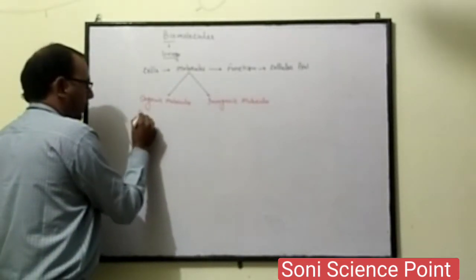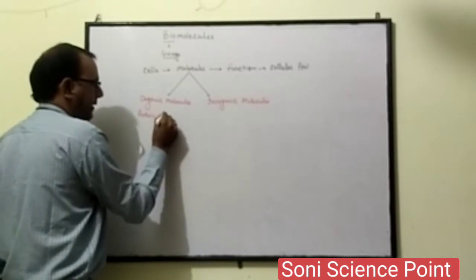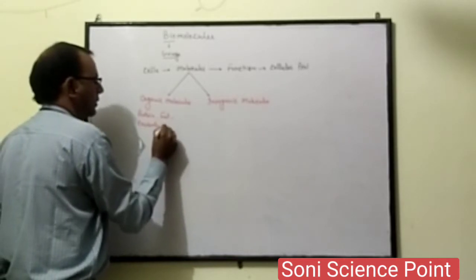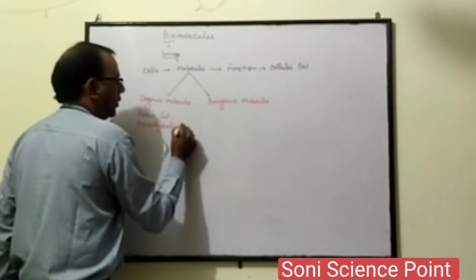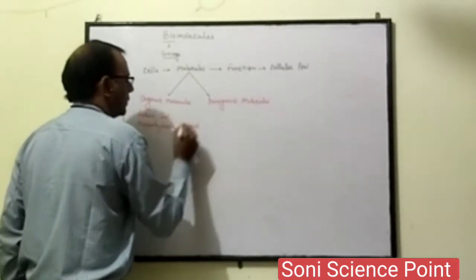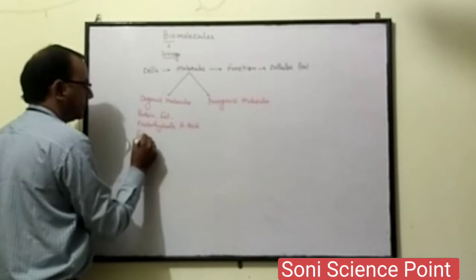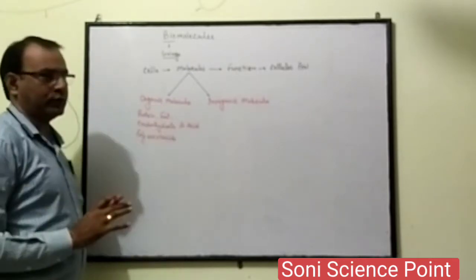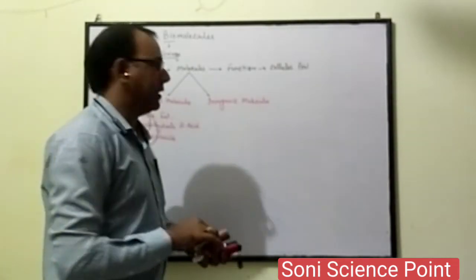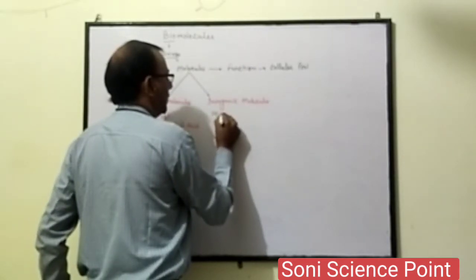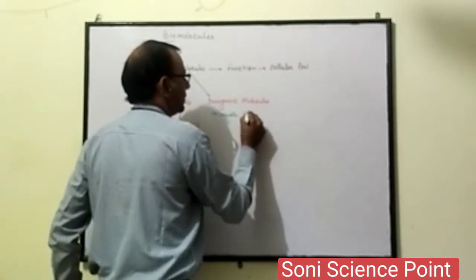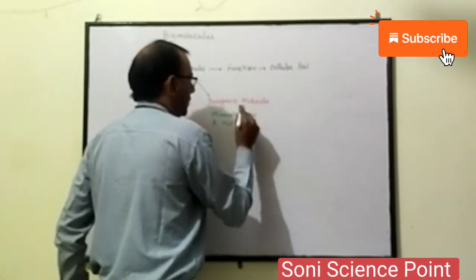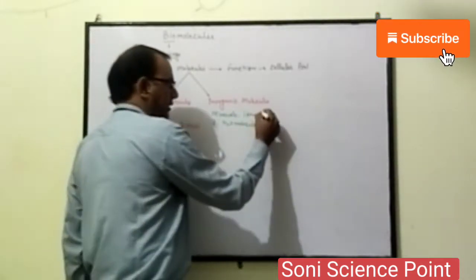Organic molecules include proteins, fats, carbohydrates, amino acids, and polysaccharides. These are organic molecules. Inorganic molecules include minerals, mineral ions, and water molecules. These are the inorganic molecules.